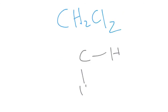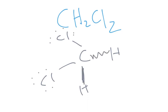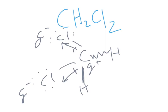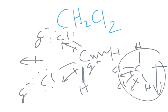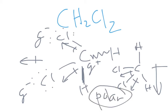CH2Cl2 looks like this, with lone pairs on the chlorines and a tetrahedral 3D configuration since the steric number is 4. Drawing the bond dipoles, we see arrows pointing toward the two chlorines. If you think about the tetrahedral structure as a tripod, notice how the bond dipoles are pointing down in general. The net dipole points down, and since a net dipole exists, this molecule is polar.